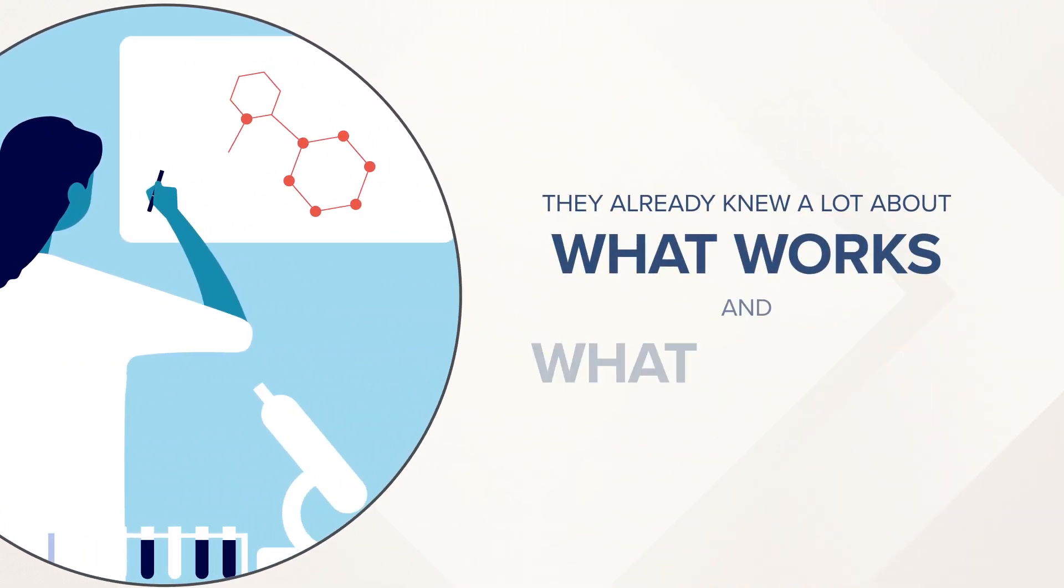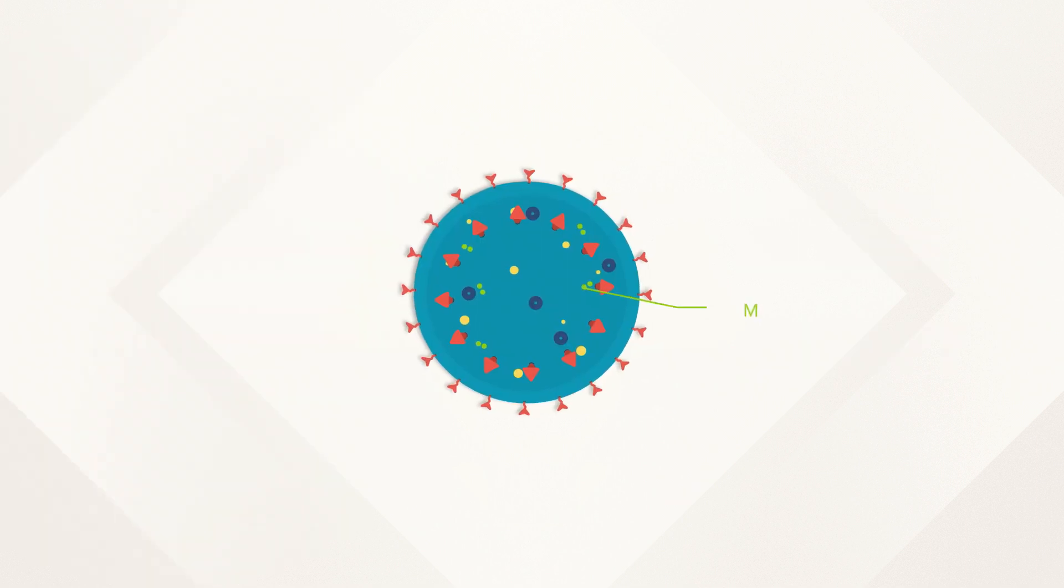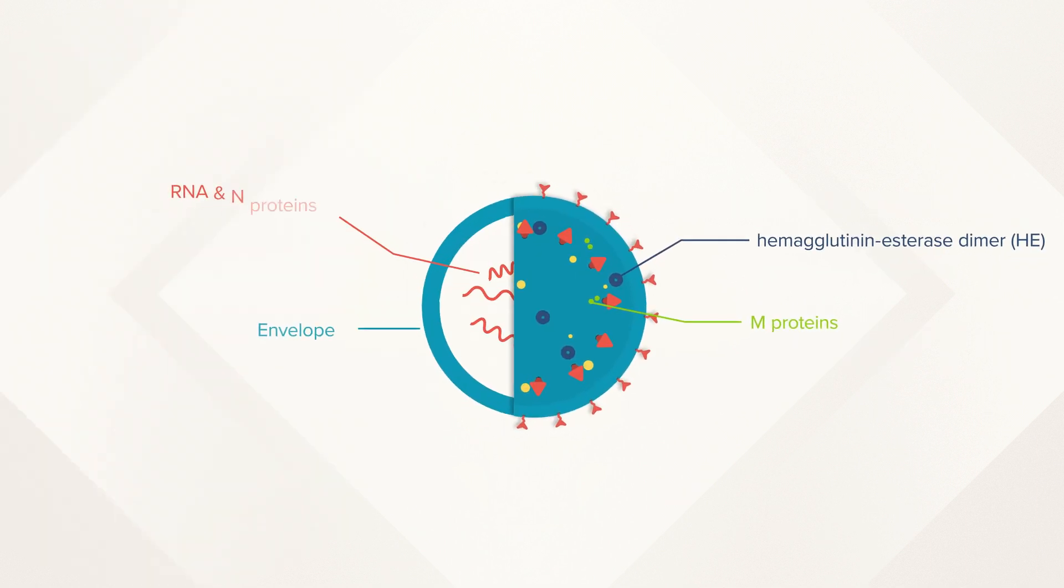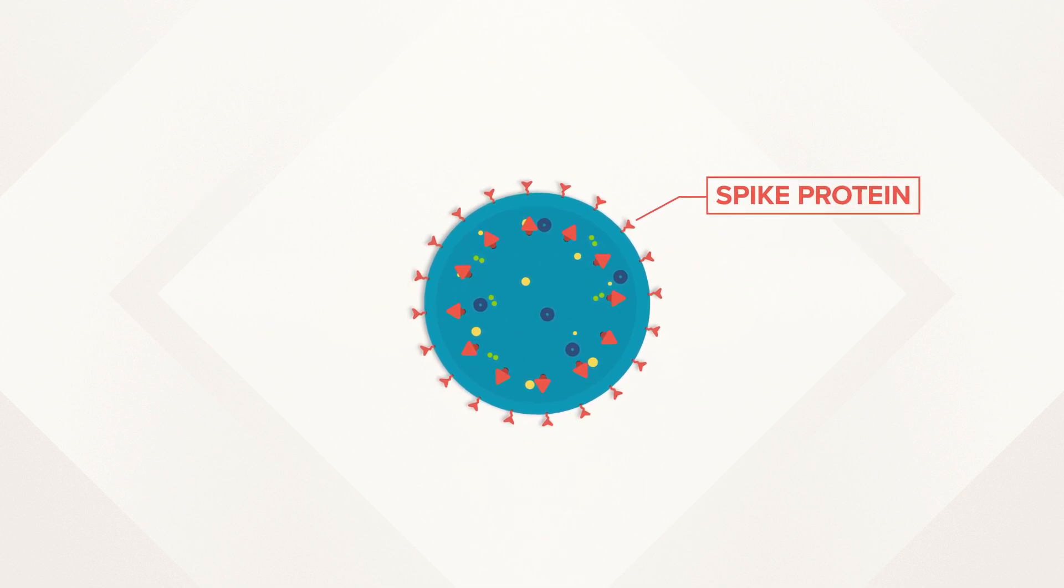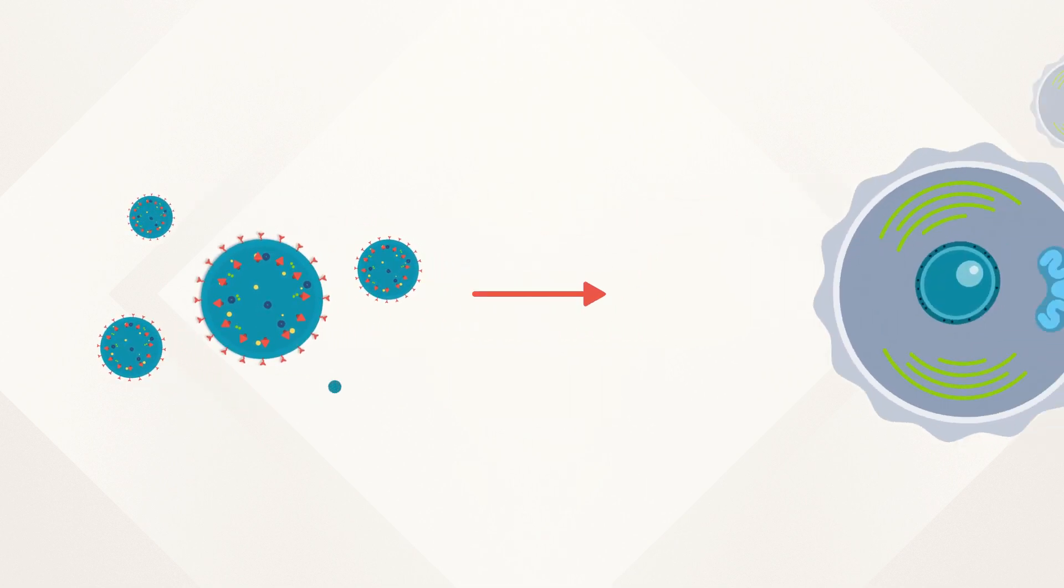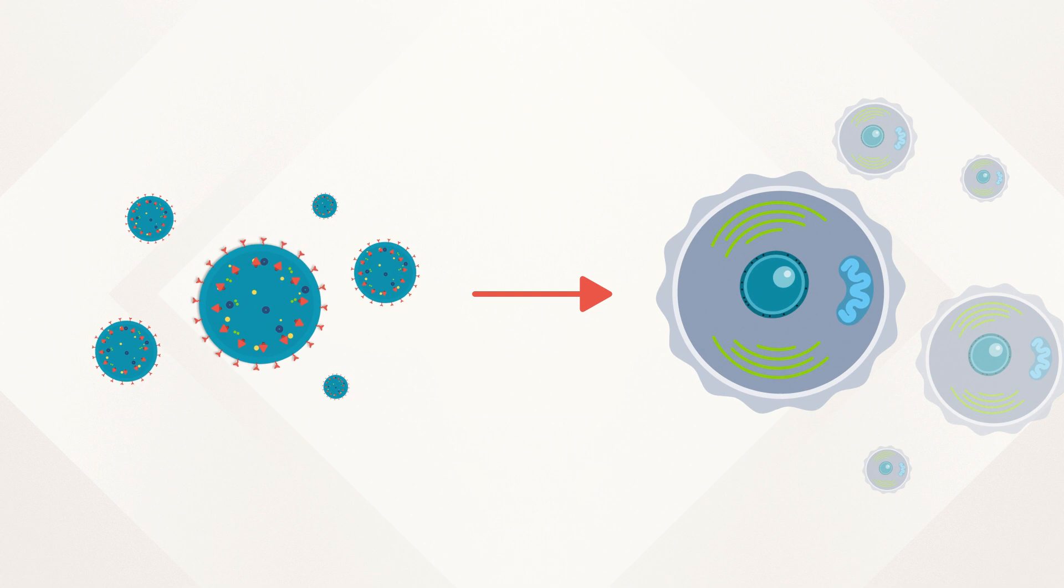They already knew a lot about what works and what doesn't. Scientists had learned how this family of viruses behaves, their biology, and the so-called spike protein, which allows the virus to enter our cells and infect us.